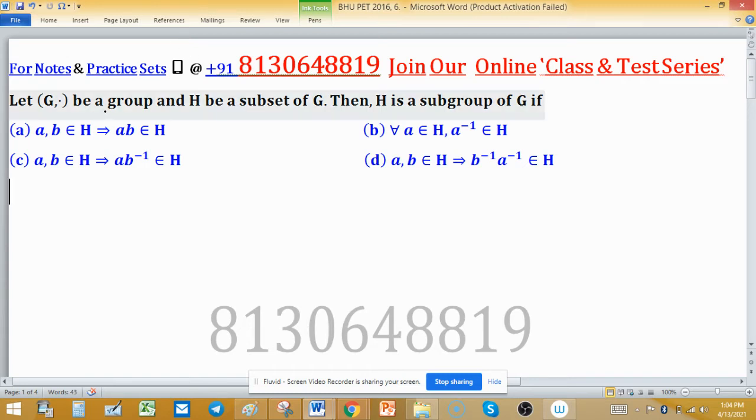But here, dot is an operation and normally because G dot is a group, it is a binary operation and it will satisfy four properties. Now, H is a subset of G and we check H will be a subgroup of G when H has the same operation induced on H.